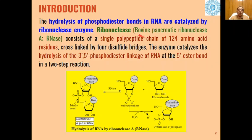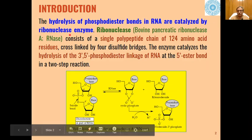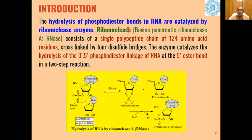The hydrolysis of phosphodiester bonds in RNA — these types of bonds are called phosphodiester bonds — are catalyzed by the enzyme ribonuclease. Ribonuclease is a single polypeptide chain of 124 amino acid residues which are cross-linked by four disulfide bridges.